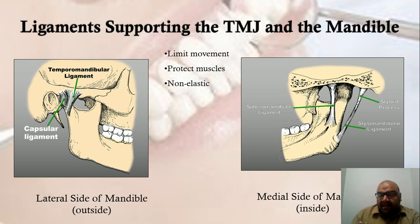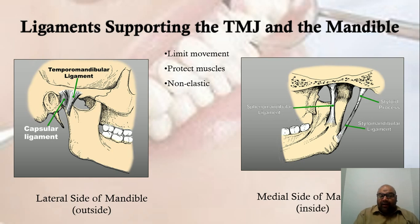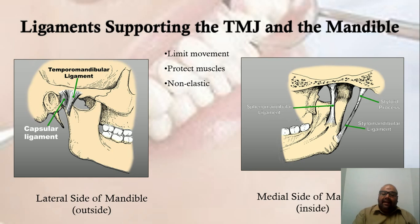There are certain ligaments not only supporting the temporomandibular joint but also supporting mandibular function — mastication, chewing, and opening and closing. The primary or principal ligament of the temporomandibular joint is the temporomandibular ligament, also known as the lateral ligament, which can be viewed on the lateral side of the mandible. On the medial side, we have two accessory ligaments: the stylomandibular ligament and the sphenomandibular ligament.